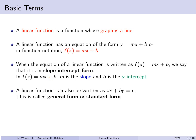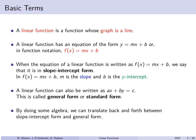You can also write a line in the form ax plus by equals c, which is called the general or standard form. On one side you have a number times x plus a number times y, and on the other side just a fixed number. Both variables x and y are on one side. By doing a little arithmetic and algebra you can go back and forth between the two forms — there's no real difference between them.